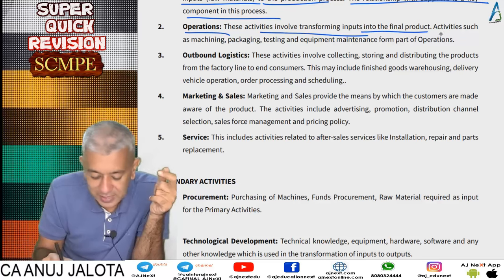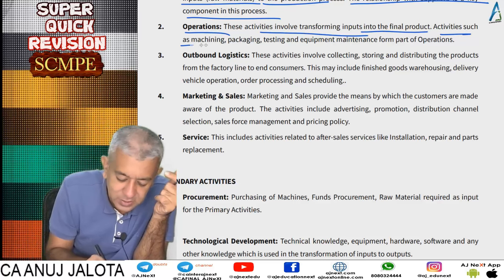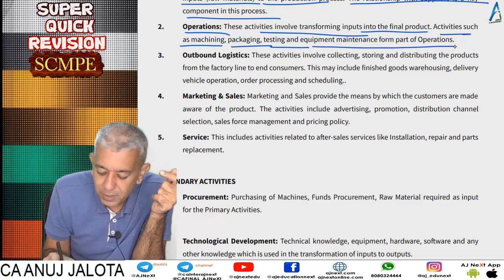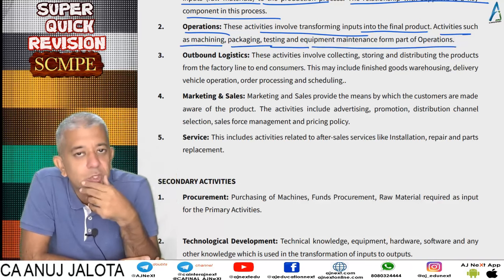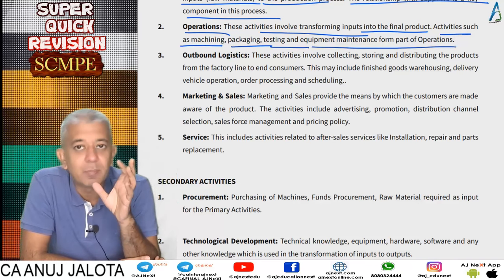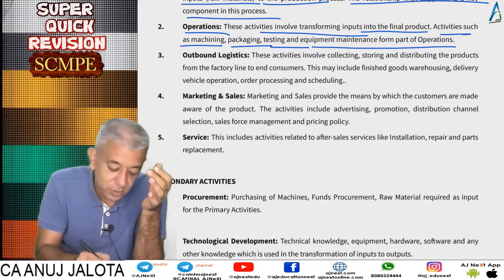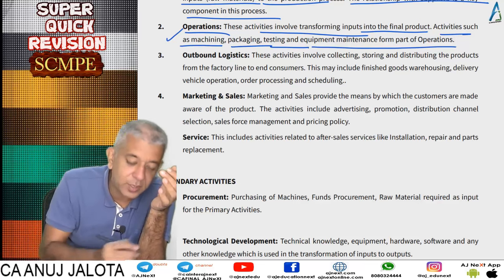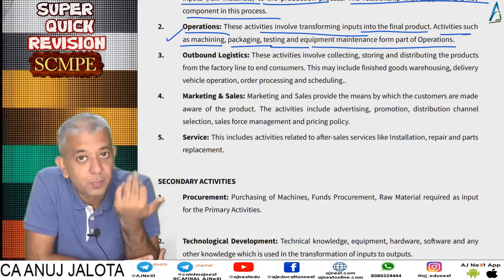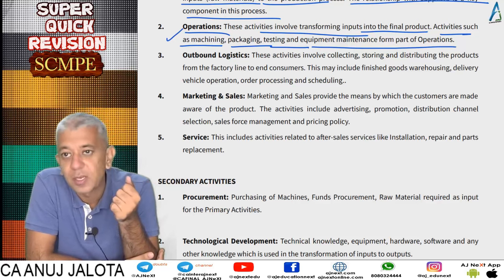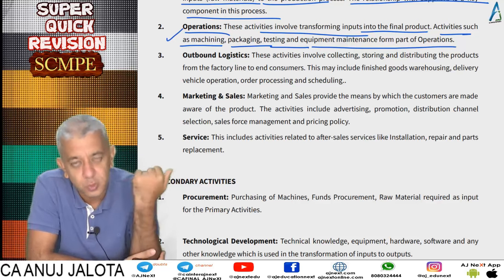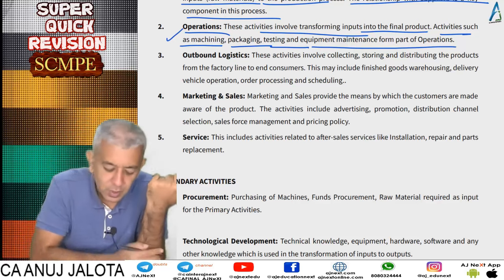Second, operations means your core manufacturing. These activities involve transforming the inputs into final products. Activities such as machining, packaging, testing, and equipment maintenance all form part of operations. Your concept of cellular manufacturing will come here — how we can make production better. TQM will also be a part of operations.